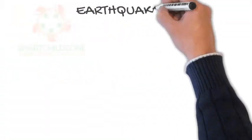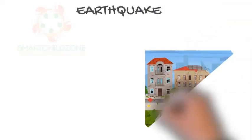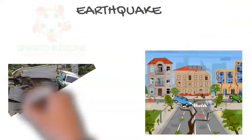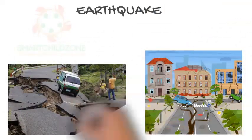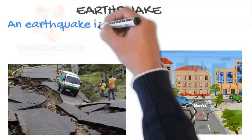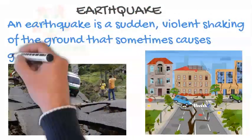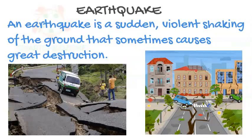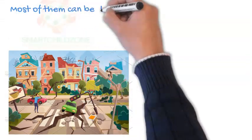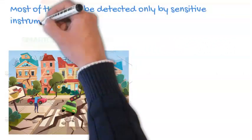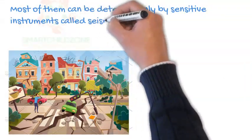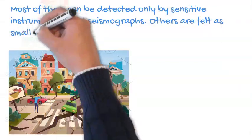Earthquake. An earthquake is a sudden, violent shaking of the ground that sometimes causes great destruction. Most of them can be detected only by sensitive instruments called seismographs.